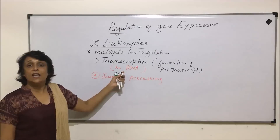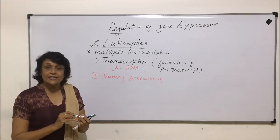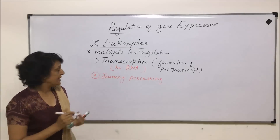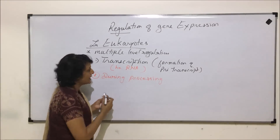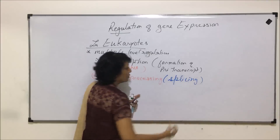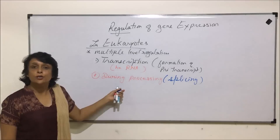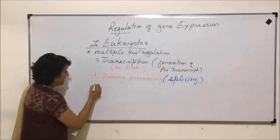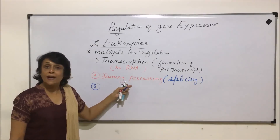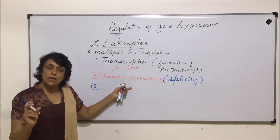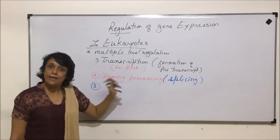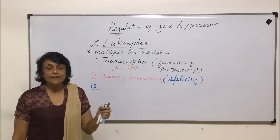The second step is processing. During processing, hnRNA undergoes splicing to form exon and intron pieces — that is the processing step, that is splicing. This is also one stage where the regulation can be done.